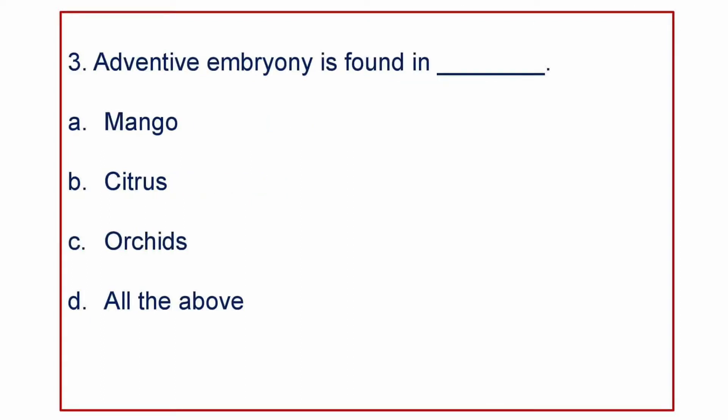Next question: Adventive Embryony is found in — A) Mango, B) Citrus, C) Orchids, or D) All of the above. The answer is All of the above — Adventive Embryony is found in Mango, Citrus, and Orchids.